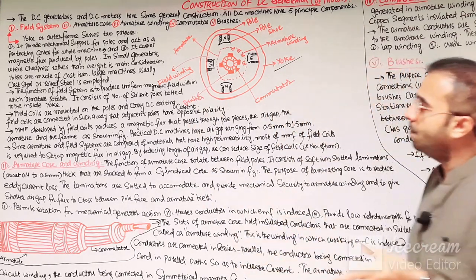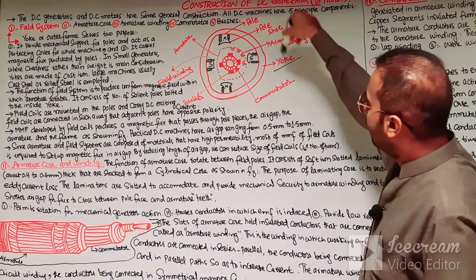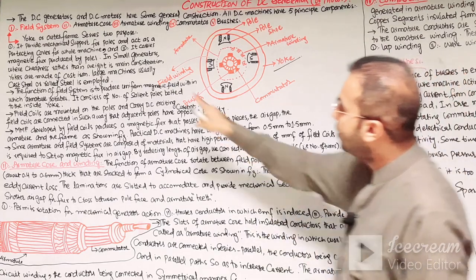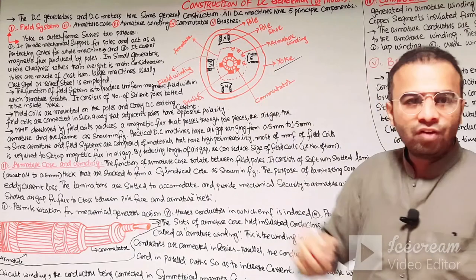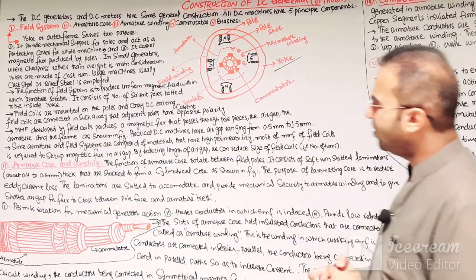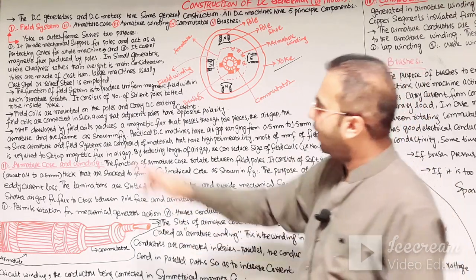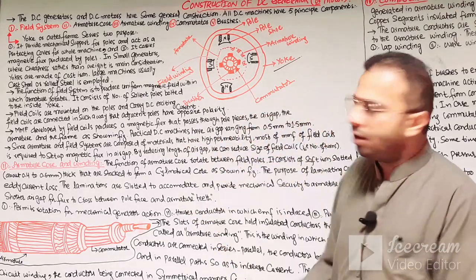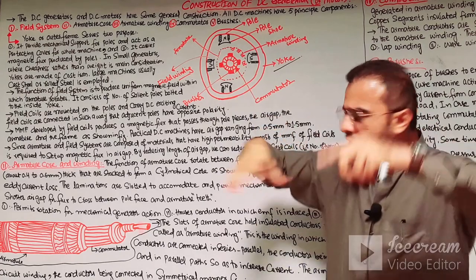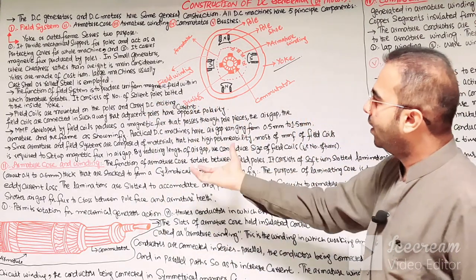In small generators where cheapness is a consideration, cast iron is used for making the yoke. But in the case of large machines, the yoke is made of cast steel or rolled steel. The function of the field system is to provide a uniform magnetic field when the armature rotates. It consists of a number of salient poles bolted inside the yoke, and the poles are fixed inside the cover or yoke of the machine.